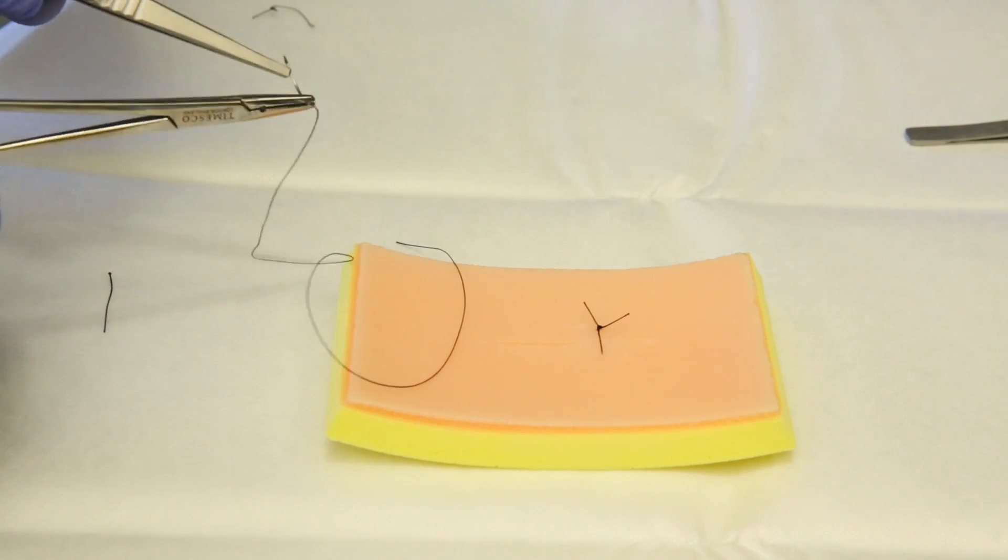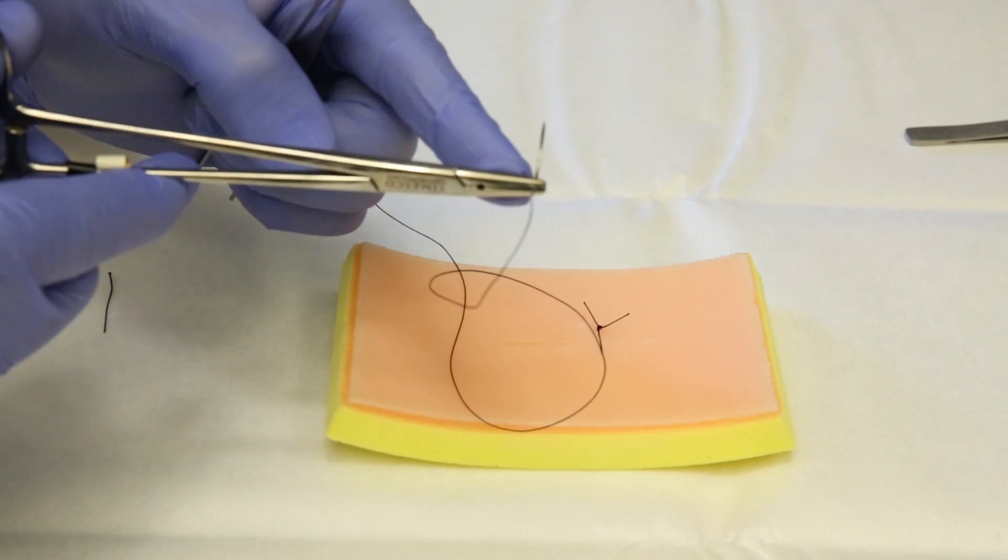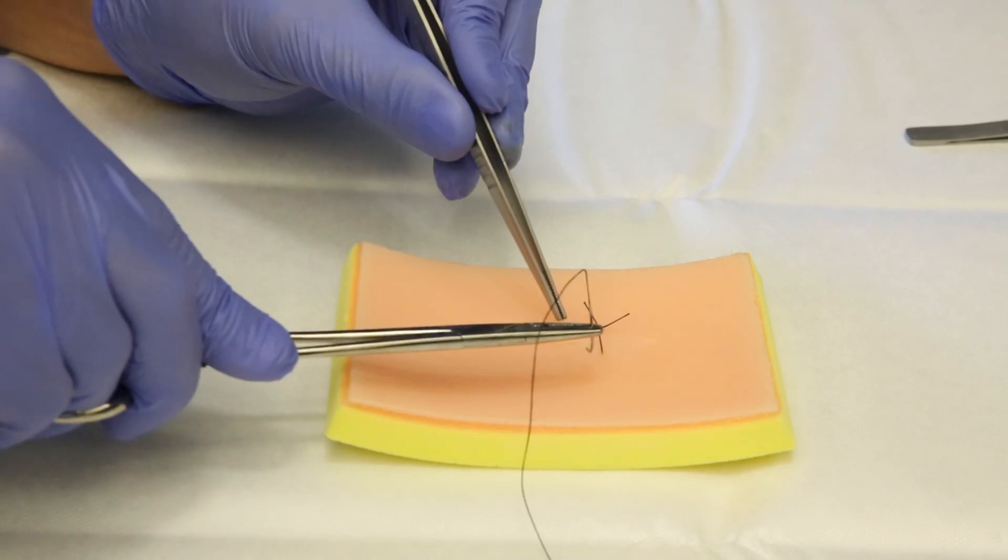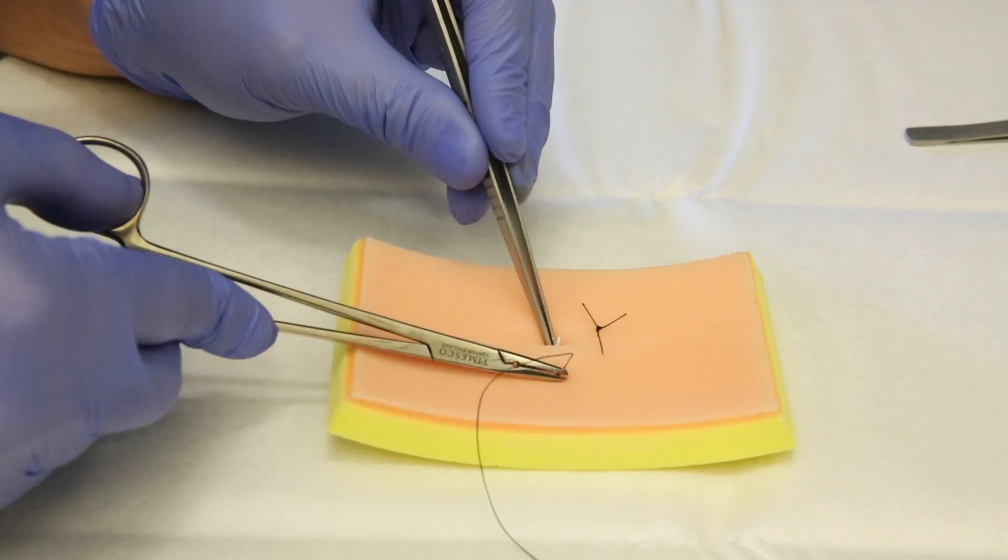First, take the needle, right position, at the tip of the needle holder, about a quarter or third from the back of the needle. Again, going through the wound margin, starting from the right side, if you are right-handed.